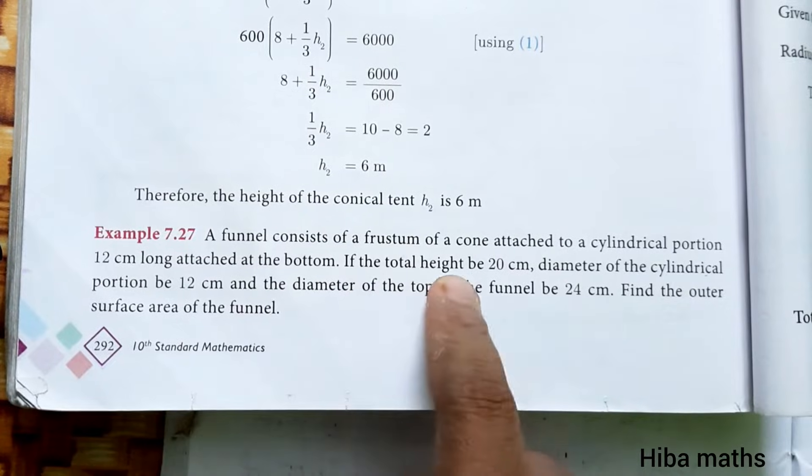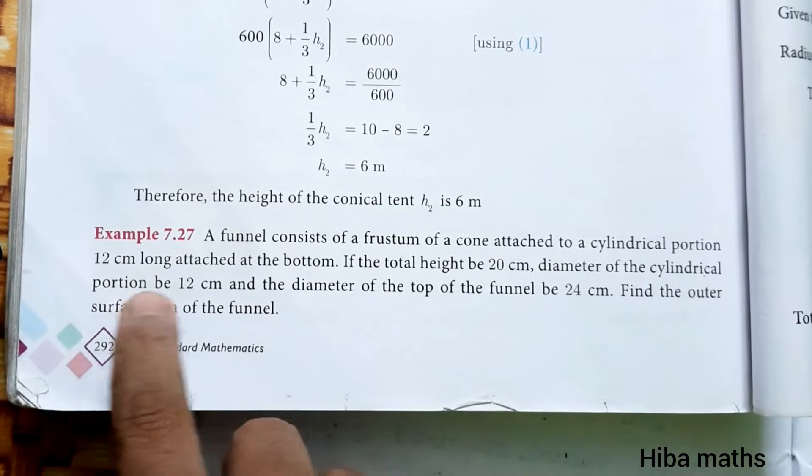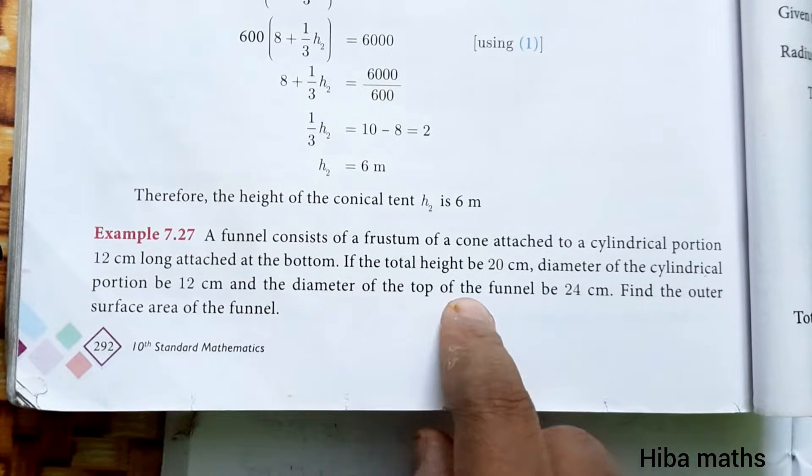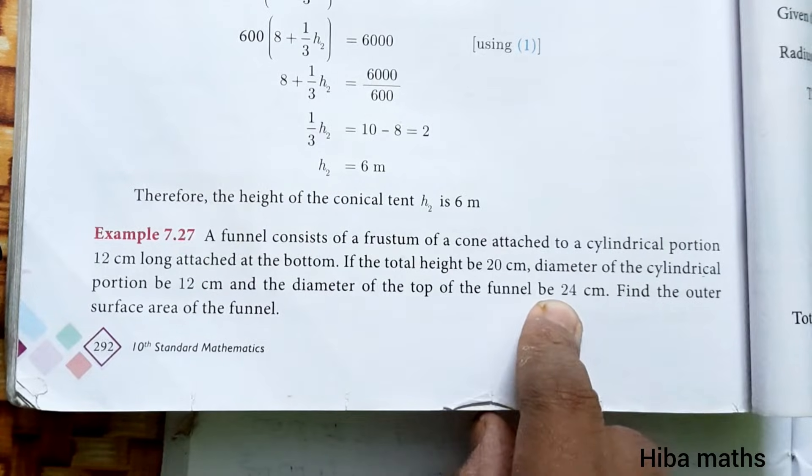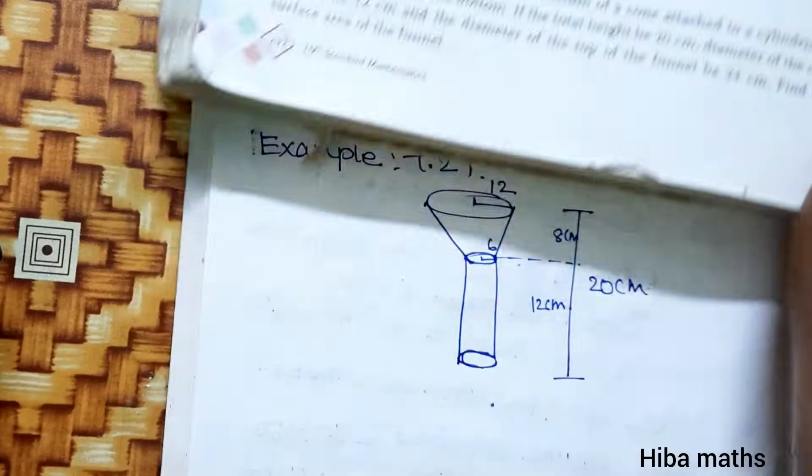If the total height is 20 cm, diameter of the cylindrical portion is 12 cm, and the diameter of the top of the funnel is 24 cm, find the outer surface area of the funnel.